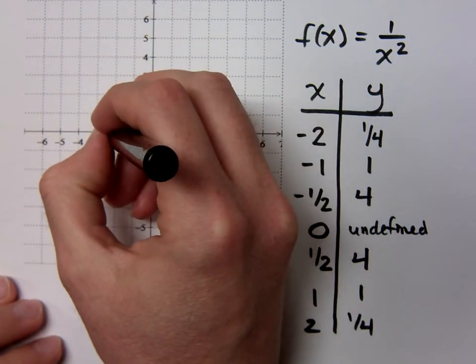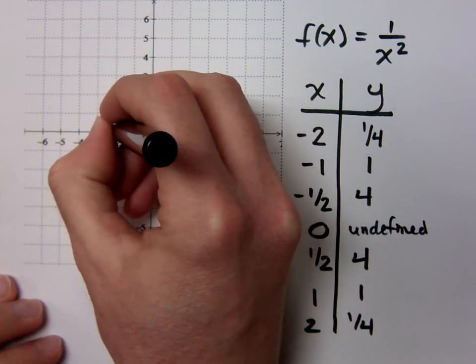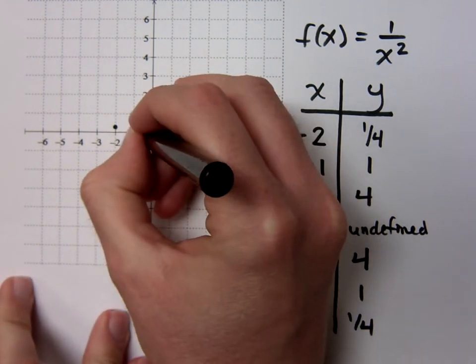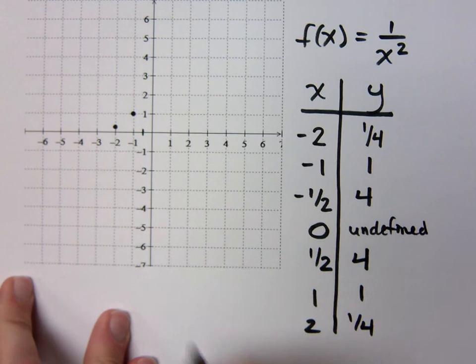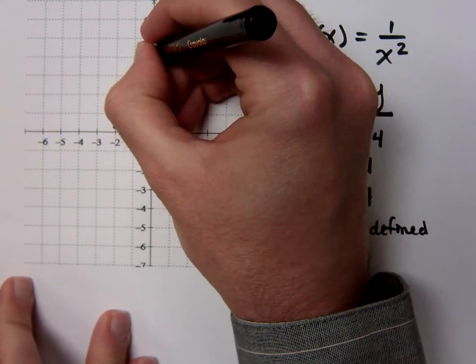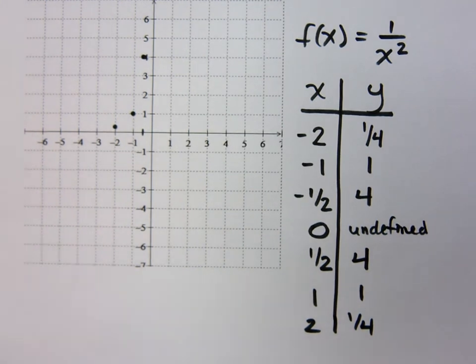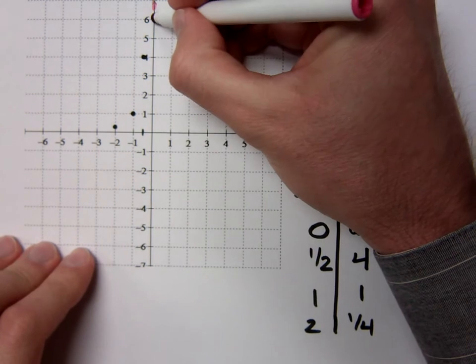Negative 2, it's not going to be below like the last, it's going to be at 1 fourth, so somewhere right about here. Negative 1, 1. And when I'm here at negative 1 half, I'm all the way up here at 4. And at 0, I'm undefined. So what do you think that means I have there? It means I've got a vertical asymptote.